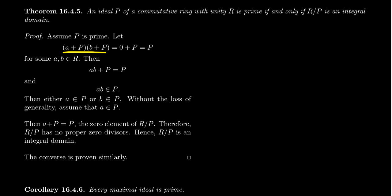If this was, in fact, an integral domain, we want to show that one of the cosets, A plus P or B plus P, was already the zero element, aka it was already P.